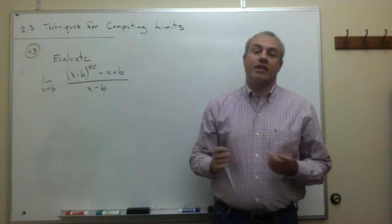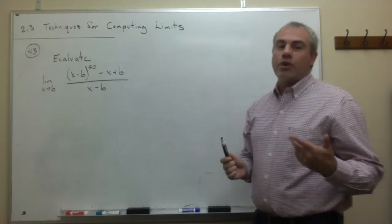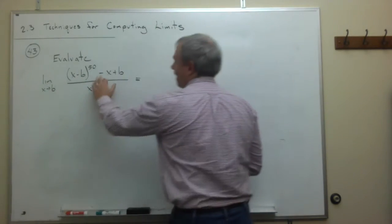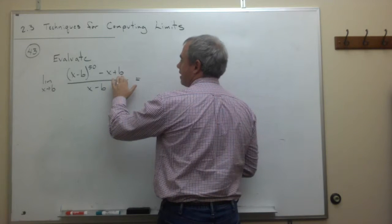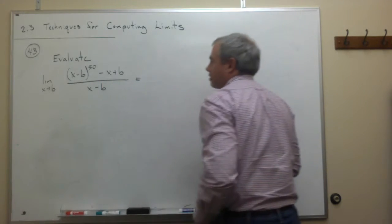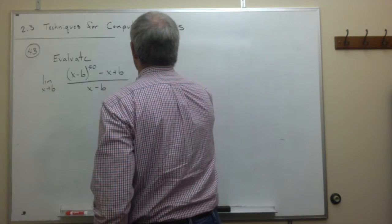The very first thing that I want to do here is rewrite this limit a little bit and put it in a better form. I see I've got a minus x plus b, but I could factor out a minus 1 from both of those and write it a little cleaner. So let's do that.